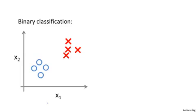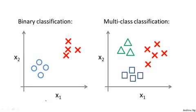Whereas previously, for a binary classification problem, our data sets look like this. For a multi-class classification problem, our data sets may look like this, where here, I'm using three different symbols to represent our three classes. So the question is, given the data set with three classes,